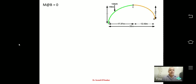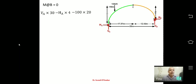Taking moment about B = 0: VA × 30 − HA × 4 − 100 × 20 = 0, giving equation (1): 30VA − 4HA = 2000. The 100 kN load is at 10 m from left (20 m from right), and the vertical distance between A and B is 4 m.